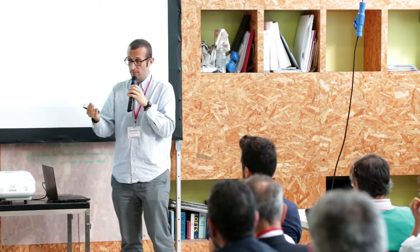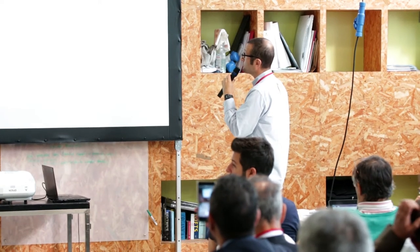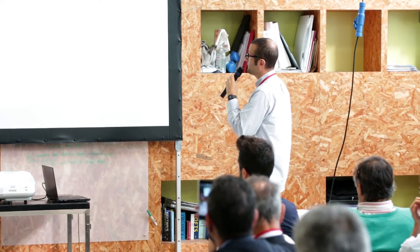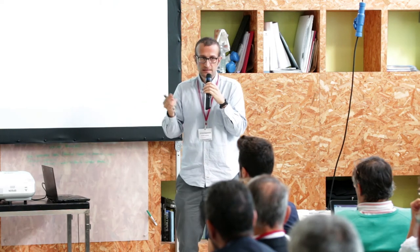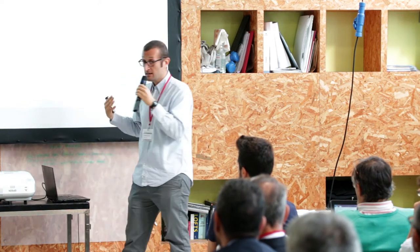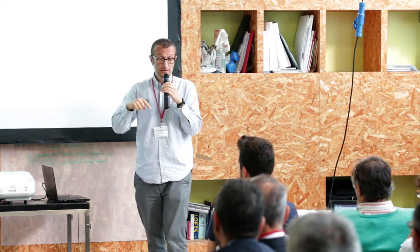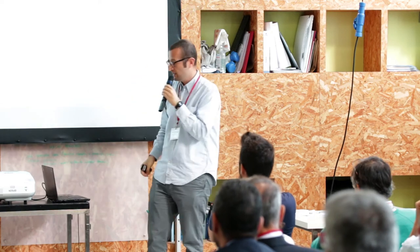Among this flexibility, we have to choose the right technology. On OpenStack you can run containers on bare metal and virtual machines. Containers need to run within a virtual machine — virtual machines are about compute resources, containers are for application deployment. Those are the two main uses of these technologies and they must be used together. If used together within OpenStack, you have an all-in-one solution — you don't need a separate containers-only server.